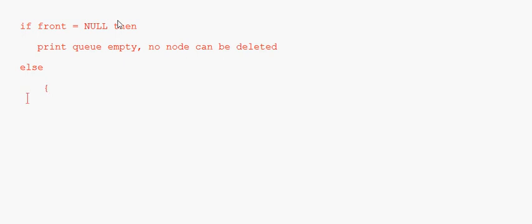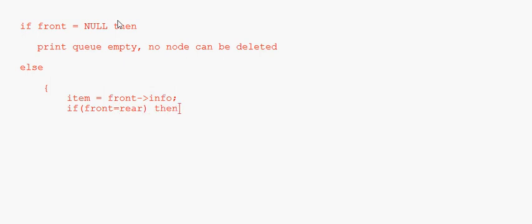In the else part, we take a variable: item is equal to front's info. So we are saving the information of the node to be deleted — the first node — into a variable called item. Then we check: if front is equal to rear...